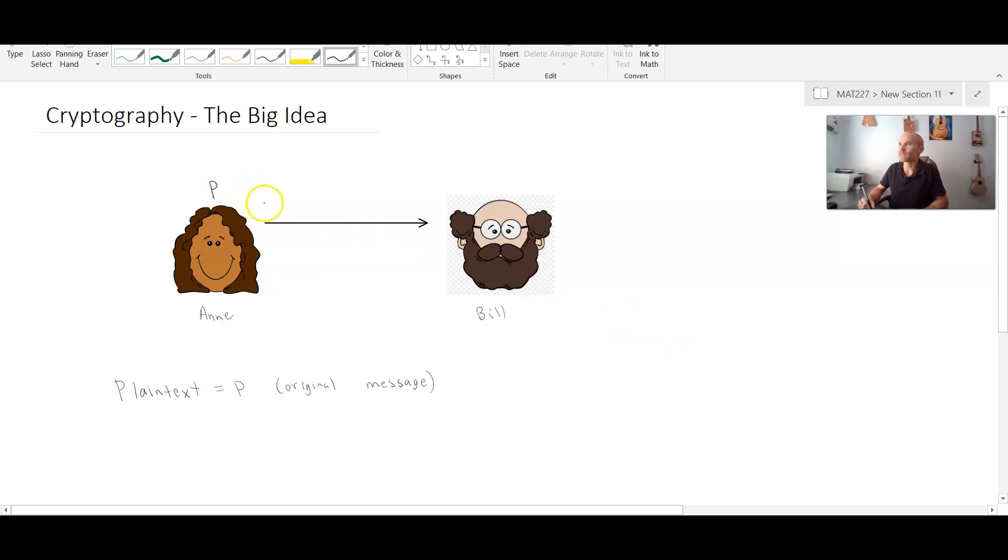So what's going to have to happen is before this gets shipped over there's going to have to be a conversion. So we're actually going to convert this plain text value into what we call a cipher. And a cipher is the encrypted value, the encrypted message.